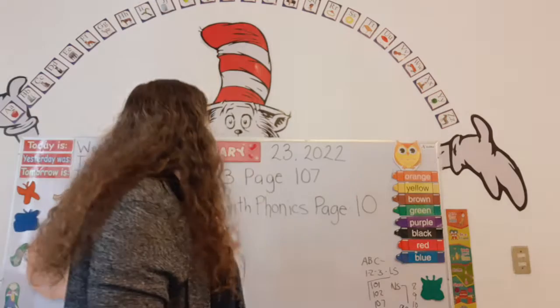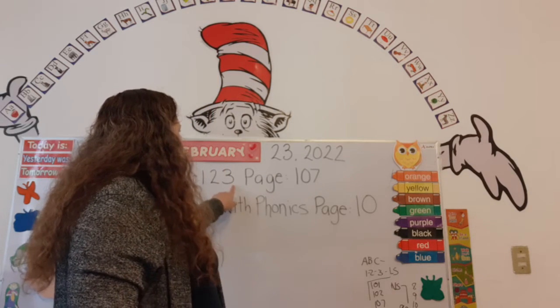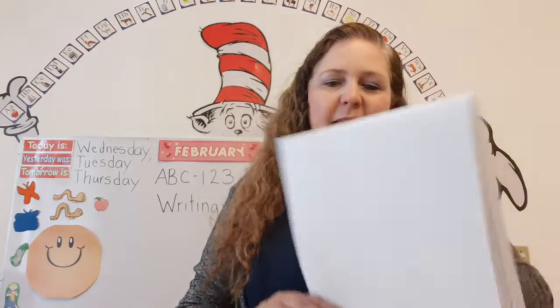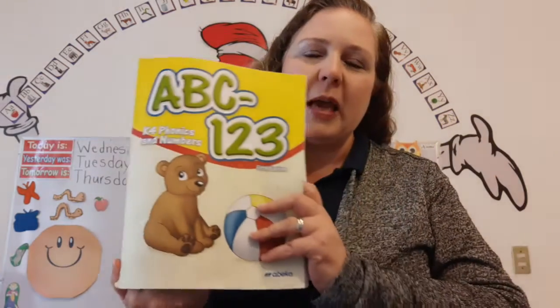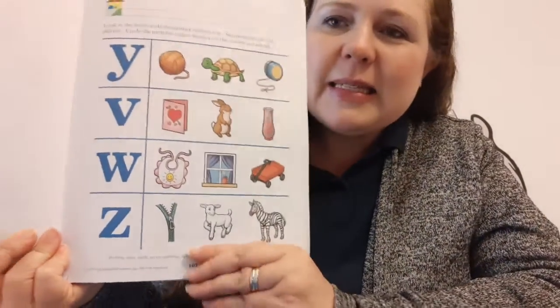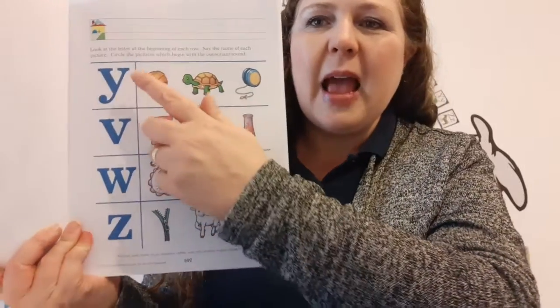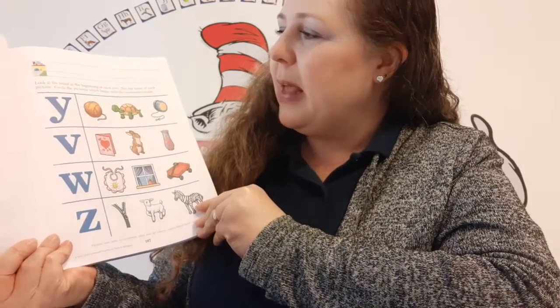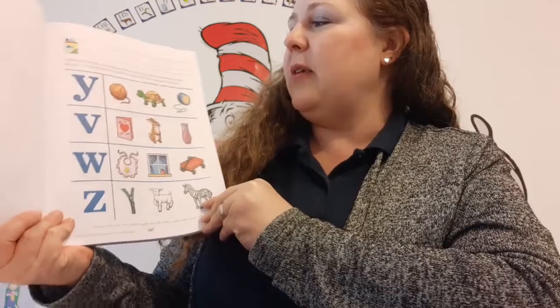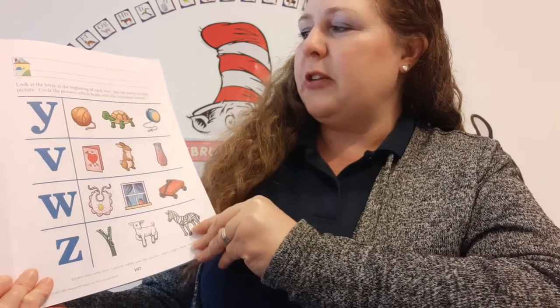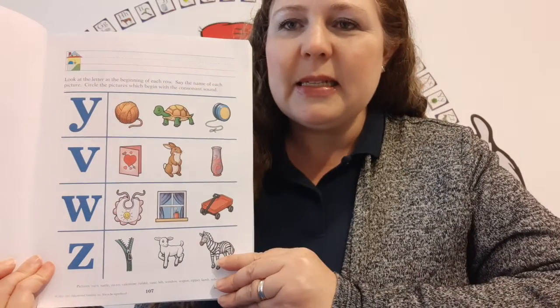Now let's look up here. It says A, B, C, one, two, three, page 107. So let's get our ABC, one, two, three book out and let's open up to page 107. Let's make sure to write our names nice and neatly at the top of the page. It says look at the letter at the beginning of each row. Say the name of each picture. Circle the pictures which begin with the consonant sound.